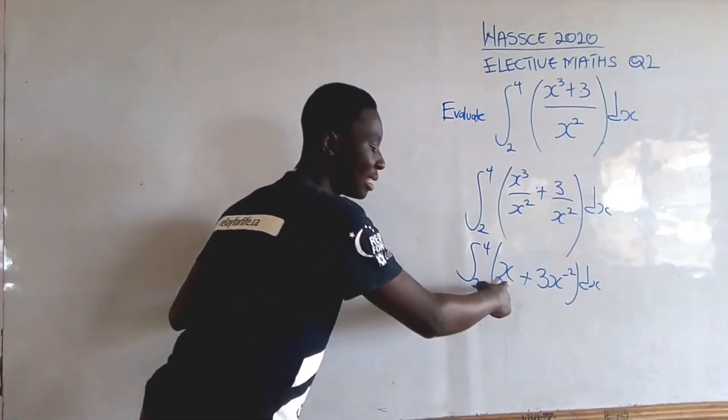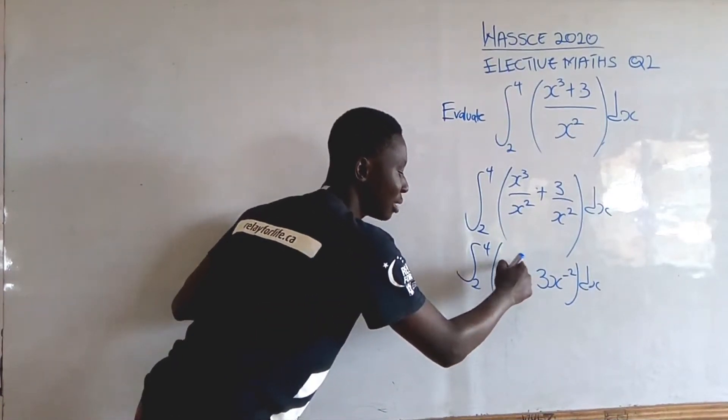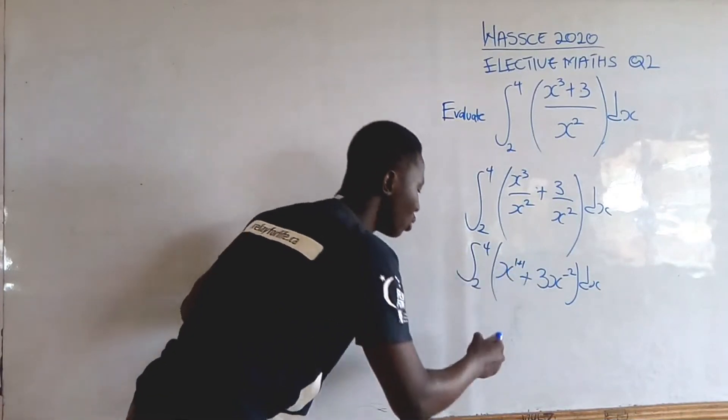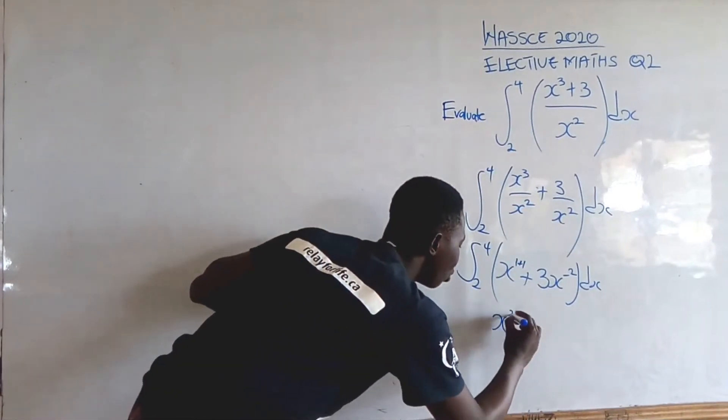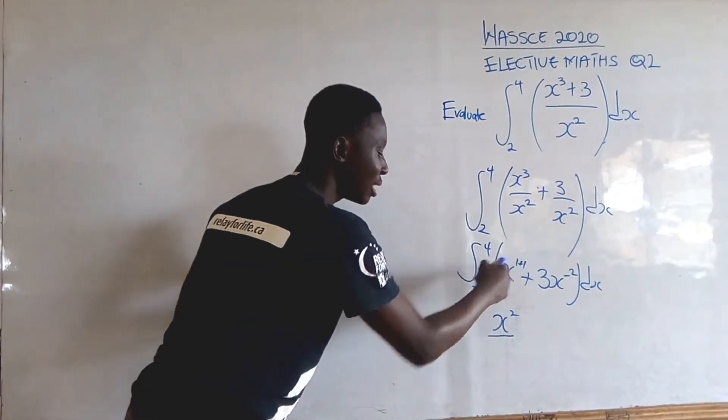When we integrate each term, the integral of x is going to be, we add 1 to the exponent. The exponent over here is 1, so we add 1 to it leaving it 2. We get x², and then we divide by the new exponent, which is 2.